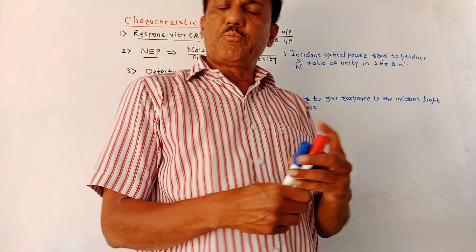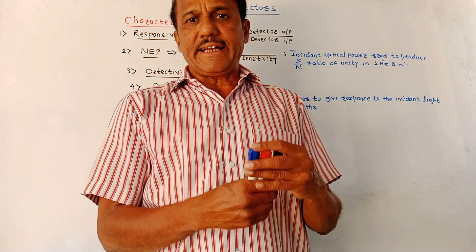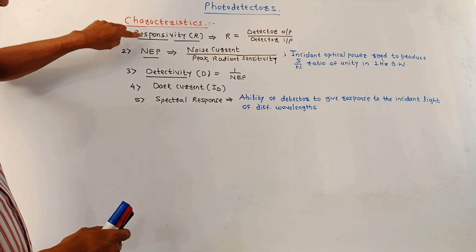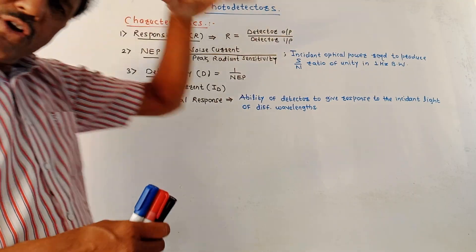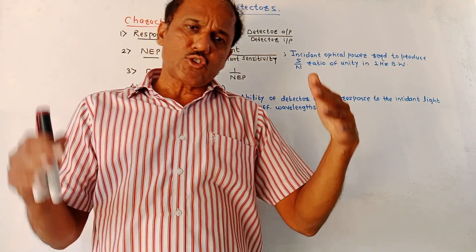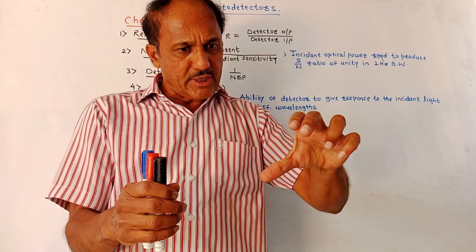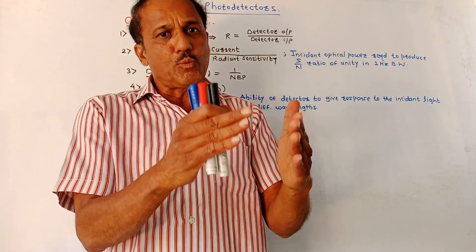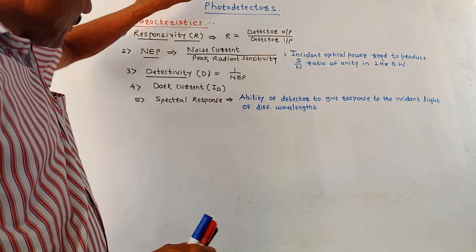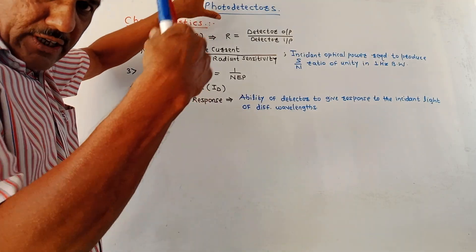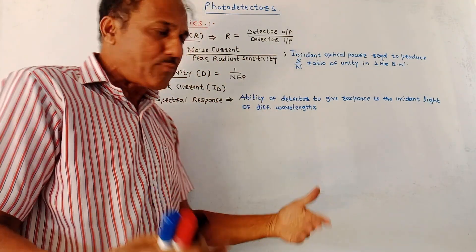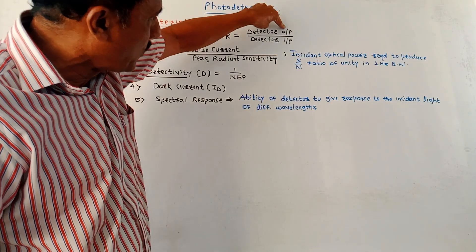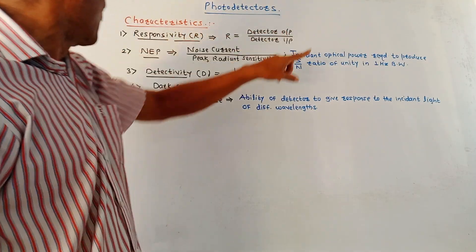Now let us discuss a few important characteristics of the photodetector. The first characteristic is responsivity. The input to an optical detector is photons — that is, light rays — and the output is an electrical quantity. Responsivity is related to the sensitivity of the photodetector; it is the ratio of detector output to detector input.